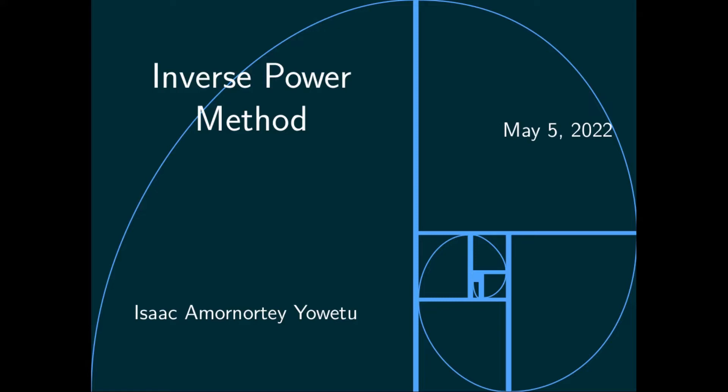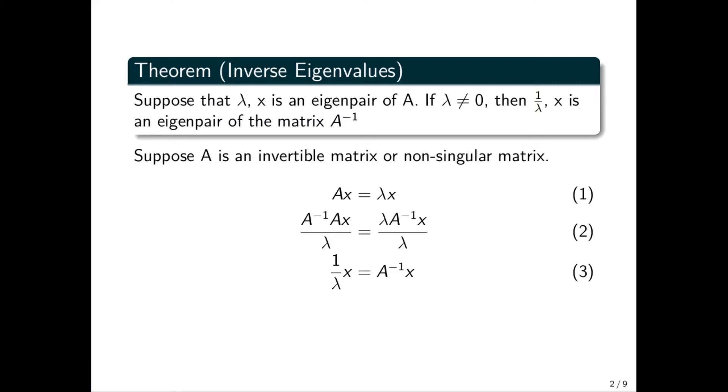First of all, we have a theorem which states: suppose we have λ, which is our eigenvalue, and x, which is the eigenvector. Suppose λ and x is an eigenpair of the matrix A. If our λ is not equal to zero, then 1/λ and x is an eigenpair of the matrix A inverse.